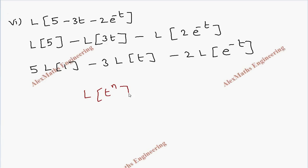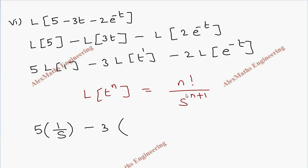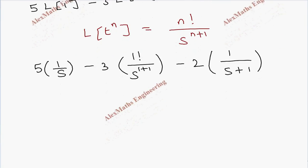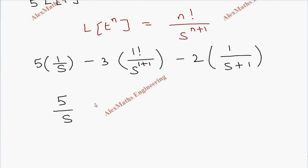We use the formula L{t^n} = n! / s^(n+1) where n is an integer. Here t is t^1. So 5·L{1} = 5·(1/s). Then minus 3 times (1! / s^2) for the L{t} term, and minus 2 times 1/(s + 1) for the L{e^(-t)} term. Rearranging: 5/s - 3/s² - 2/(s + 1).